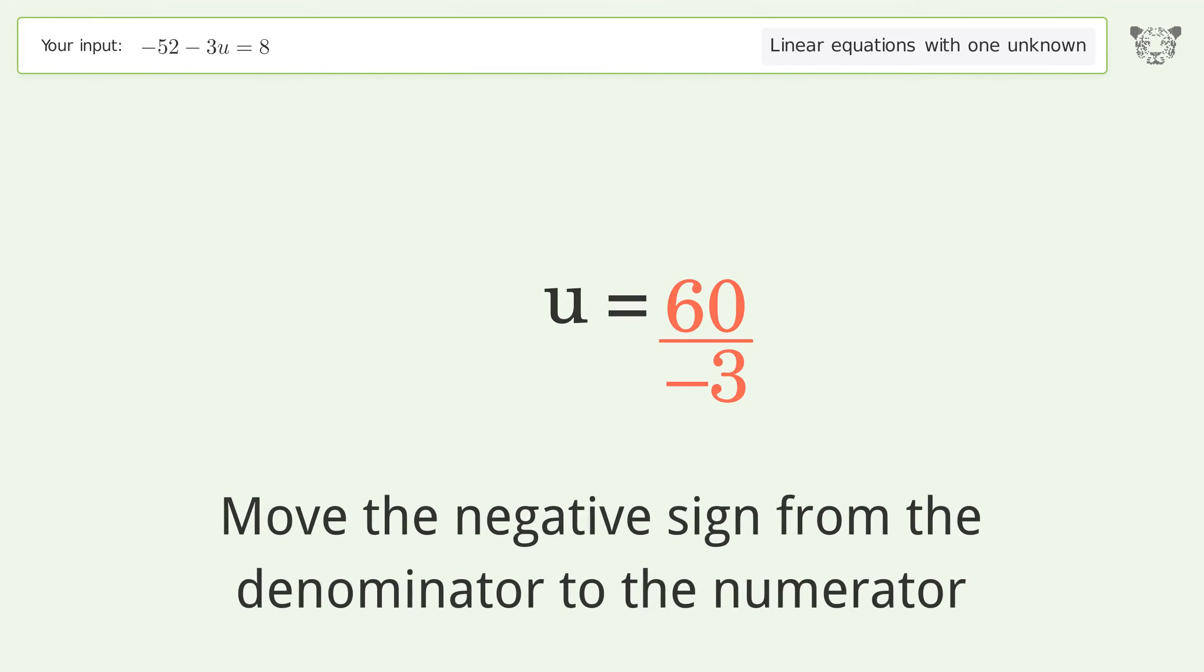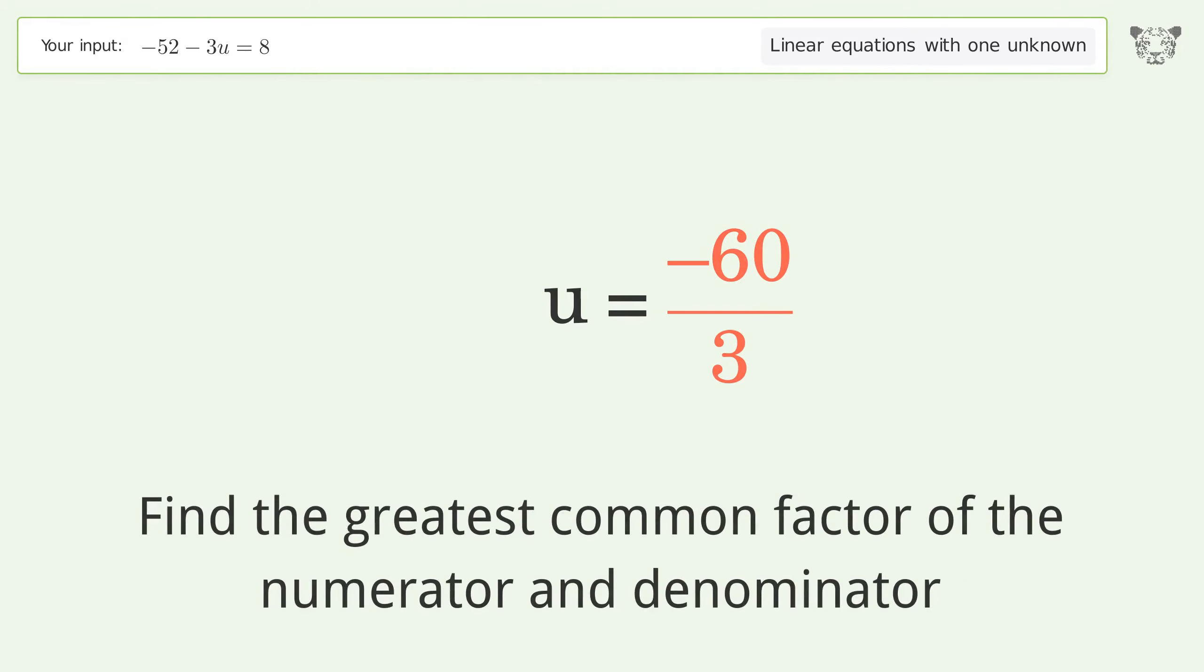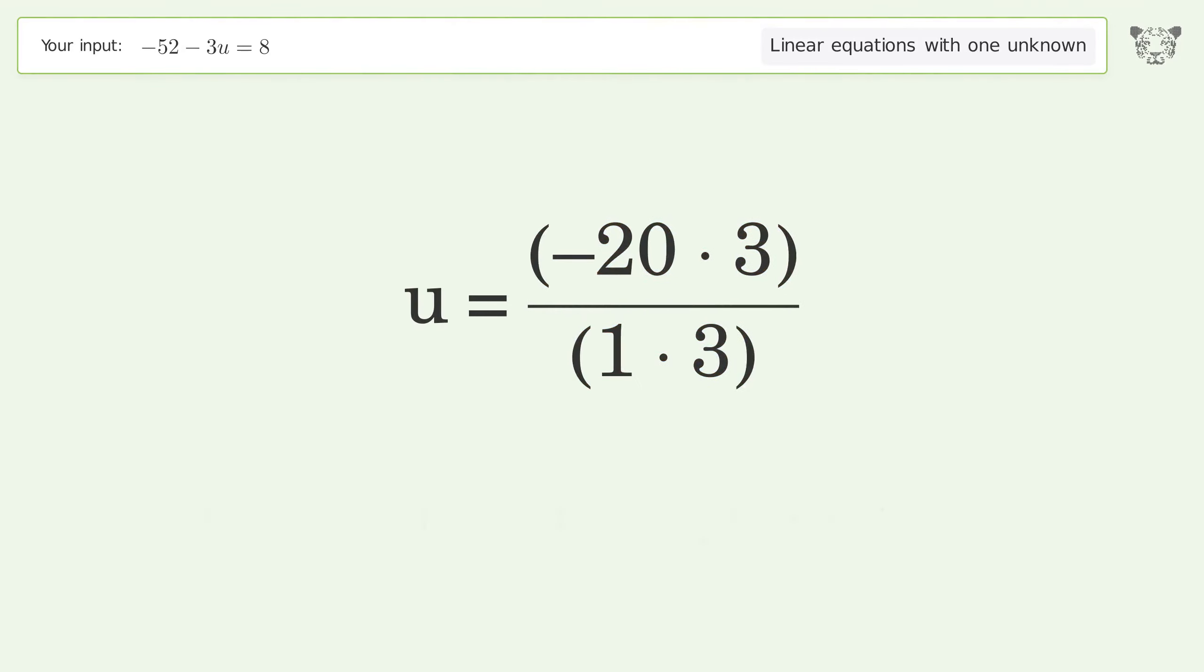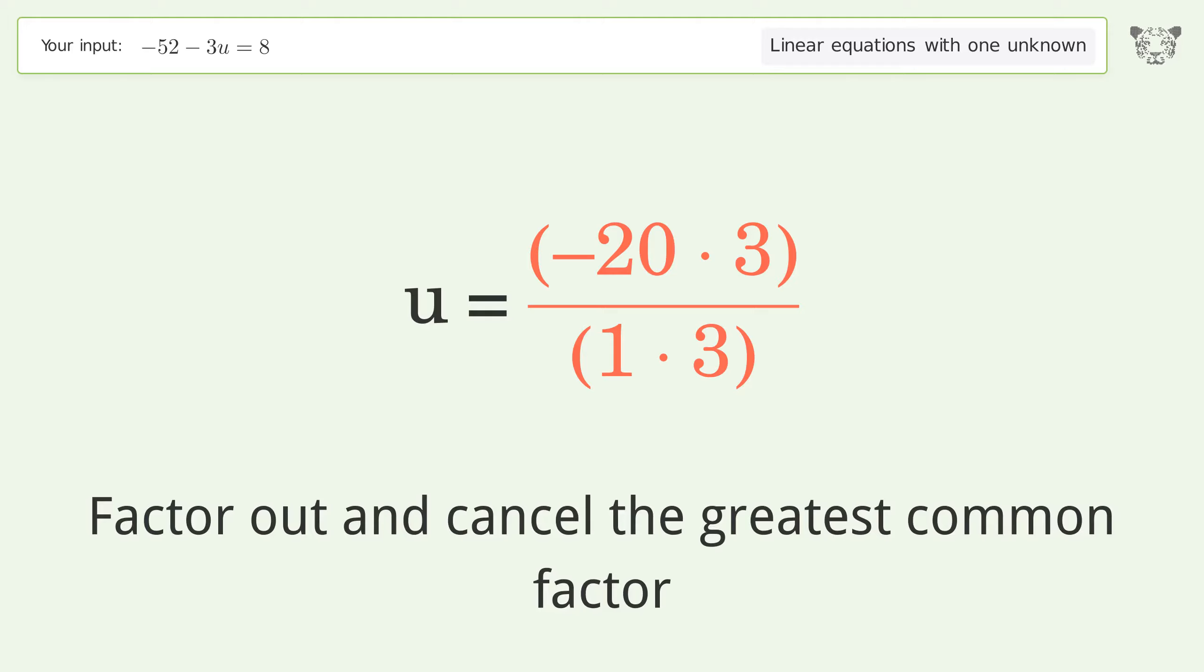Move the negative sign from the denominator to the numerator. Find the greatest common factor of the numerator and denominator. Factor out and cancel the greatest common factor.